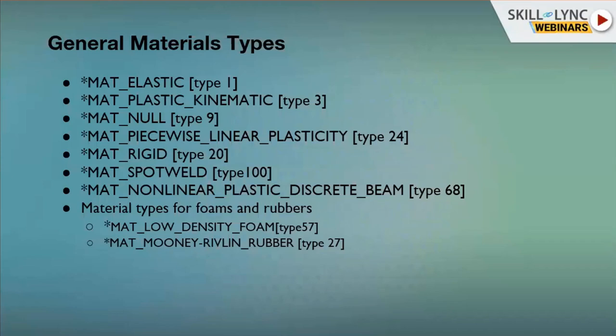Type 24 — MAT_PIECEWISE_LINEAR_PLASTICITY — is the most important and widely used material model in crash analysis. It is an elastic-plastic material where the stress-strain curve can be defined, and failure can be applied based on plastic strain or minimum time step. MAT_RIGID (Type 20): parts assigned this material are considered rigid bodies, so no need to create separate rigid body definitions — simply assign MAT_RIGID to maintain a part as rigid.